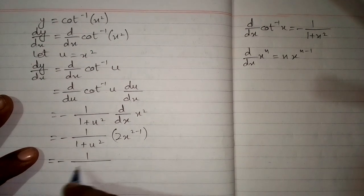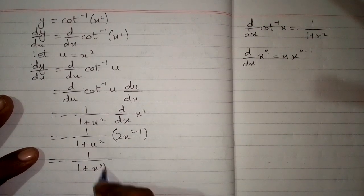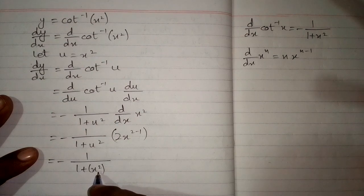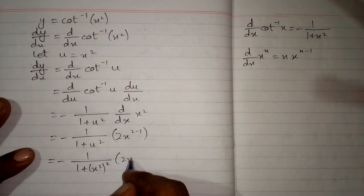Now we will put back the value of u which is x squared. So we have 1 upon 1 plus x squared to the power 2, and here we have 2x.